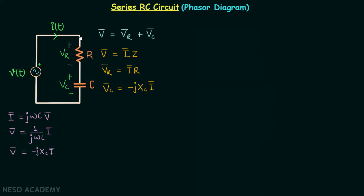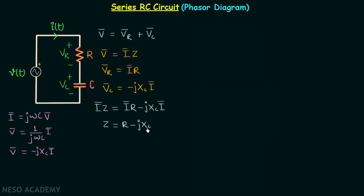Substituting all these into the equation, we have I phasor·Z equals I phasor·R minus j·XC·I phasor. Taking I common and cancelling it out, we get impedance Z equal to resistance R minus j·XC, which is the capacitive reactance.